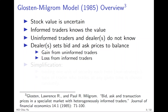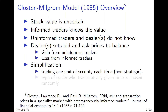In this model we have two simplifications, which can be relaxed in other models. First, the trading size of security units is fixed each time — traders cannot choose the size. Second, the type of trader who arrives at any given point in time is random — they cannot choose when to arrive. For today, we focus on the basic model of Glosten and Milgrom, 1985.